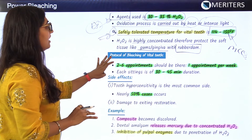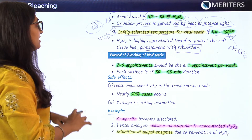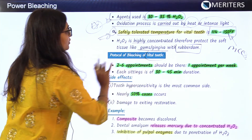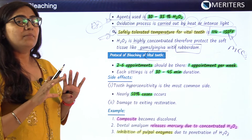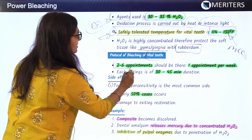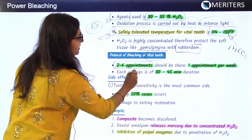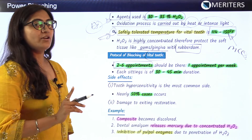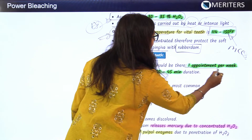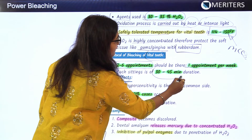Coming to the protocol — the basic treatment procedure when bleaching a vital tooth: a vital bleaching procedure is divided into 2 to 6 appointments. Approximately 1 appointment per week, and the duration of each appointment is about 30 to 45 minutes.